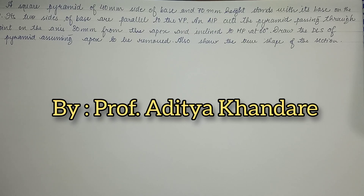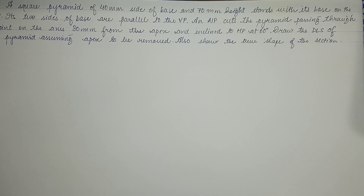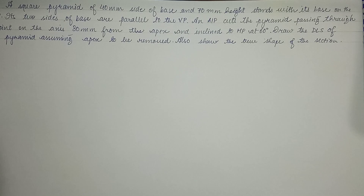Hello dear students, once again we are back with a new video on a new problem of section of solid and development of lateral surface. Here we have been given a square pyramid of 40mm side of base and 70mm height, standing with its base on HP. Its two sides of the base are parallel to VP. An AIP — that is auxiliary inclined plane — cuts the pyramid passing through the point on the axis 30mm from the apex and inclined to HP at 60 degrees. Draw the development of lateral surface of the pyramid assuming the apex to be removed, and also show the true shape of the section.